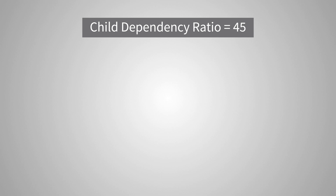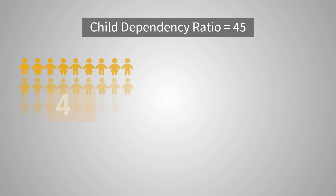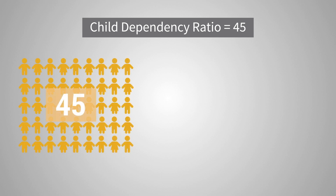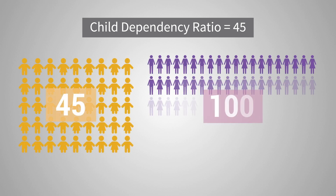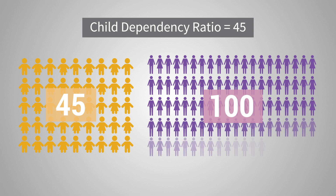For example, a child dependency ratio of 45 means there are 45 children for every 100 working age adults.